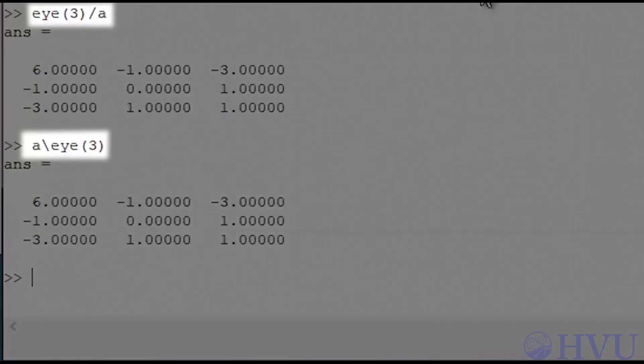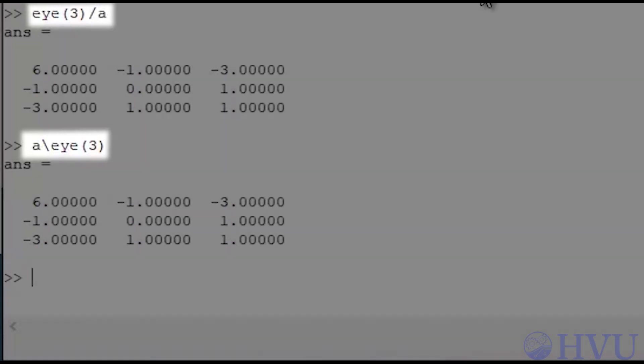As does using the backslash operator and typing A backslash EYE of 3. Recall that in both cases, the operand on what I think of as the uphill side of the operator is in the numerator.